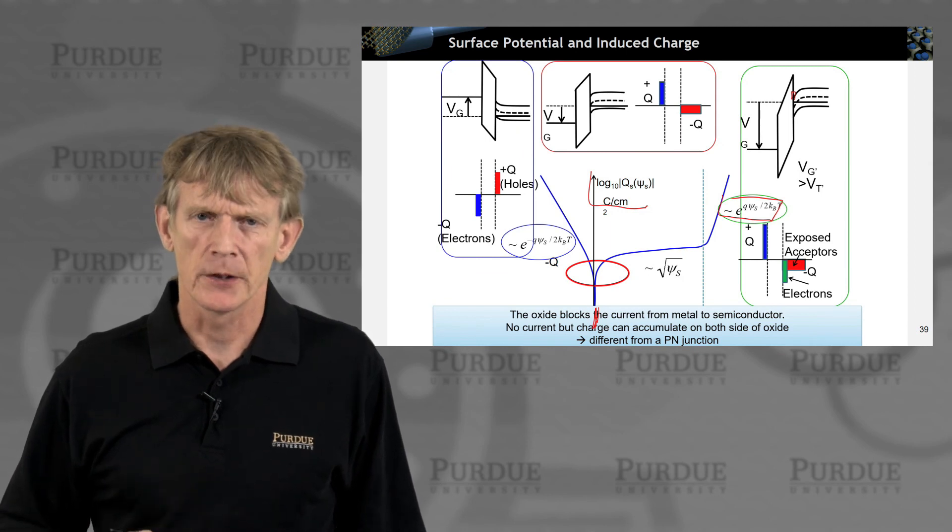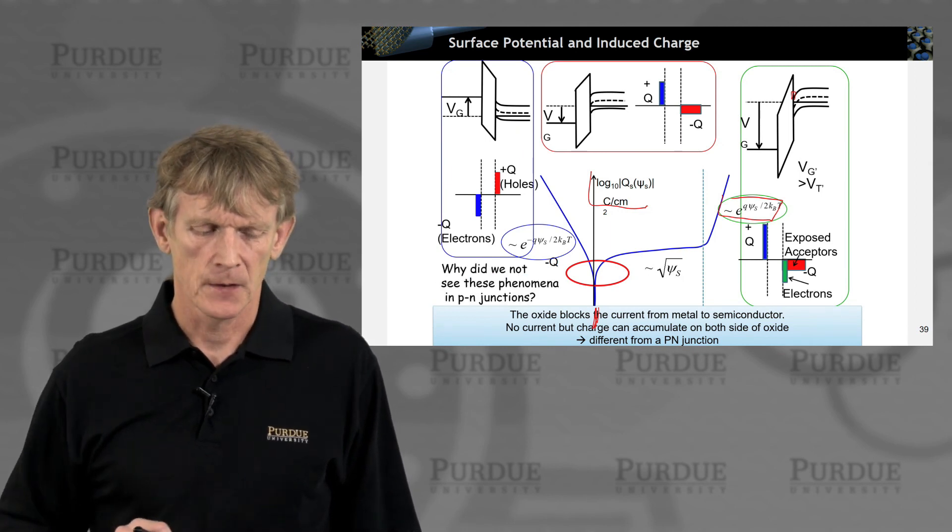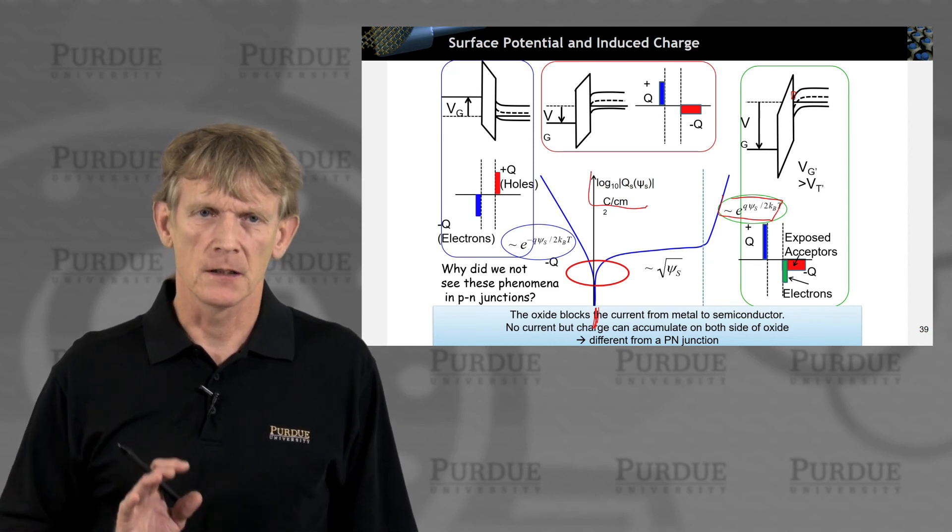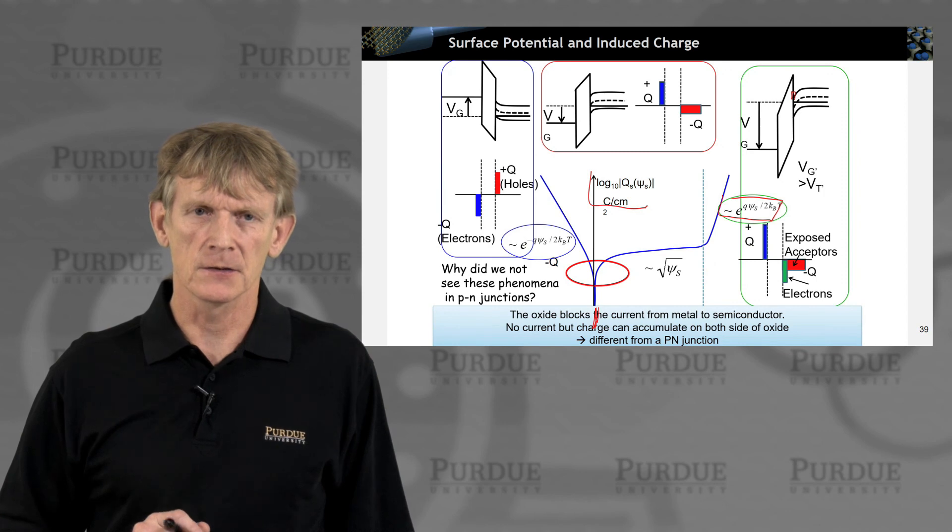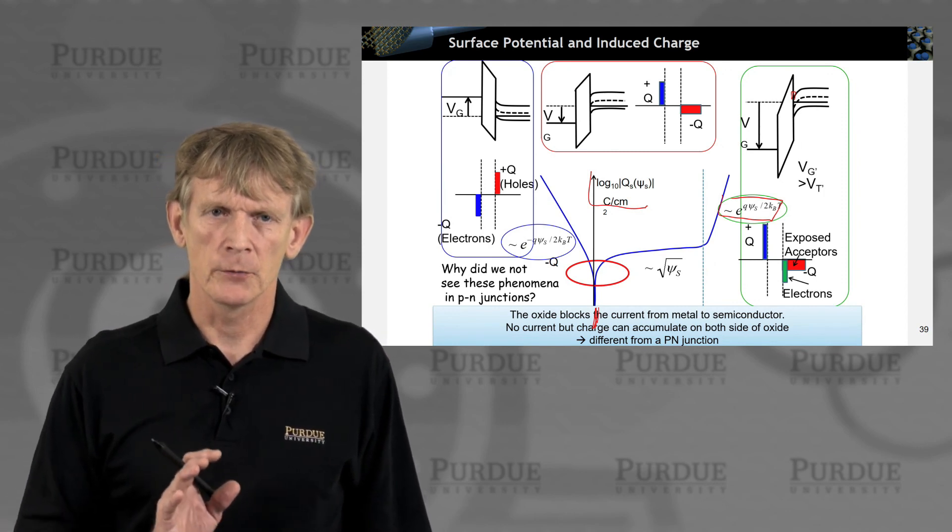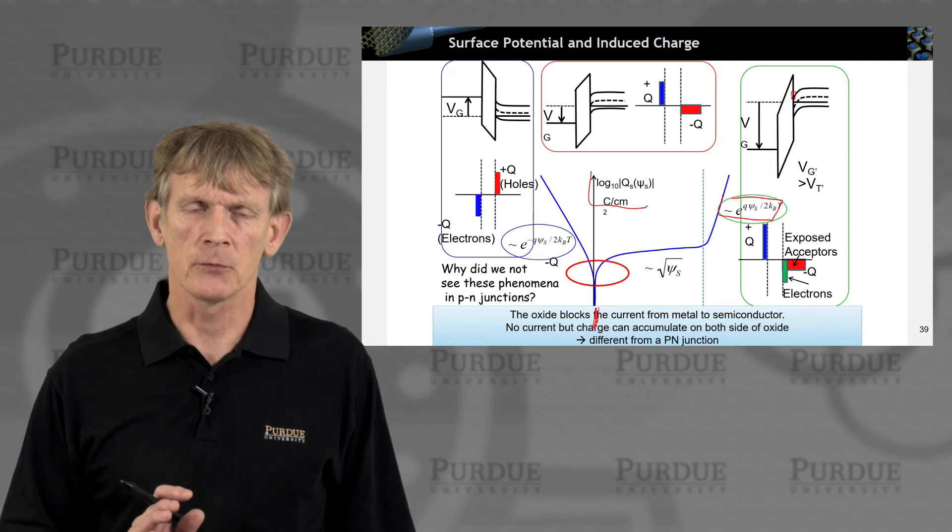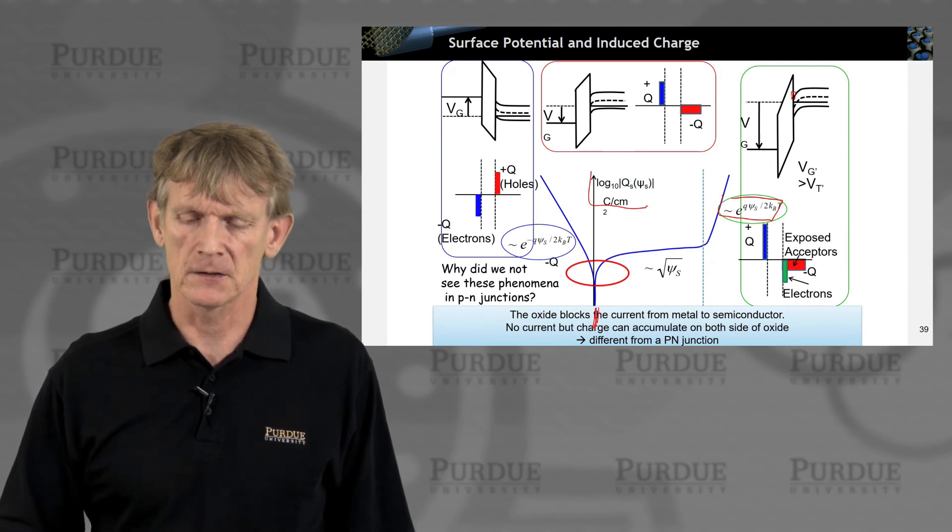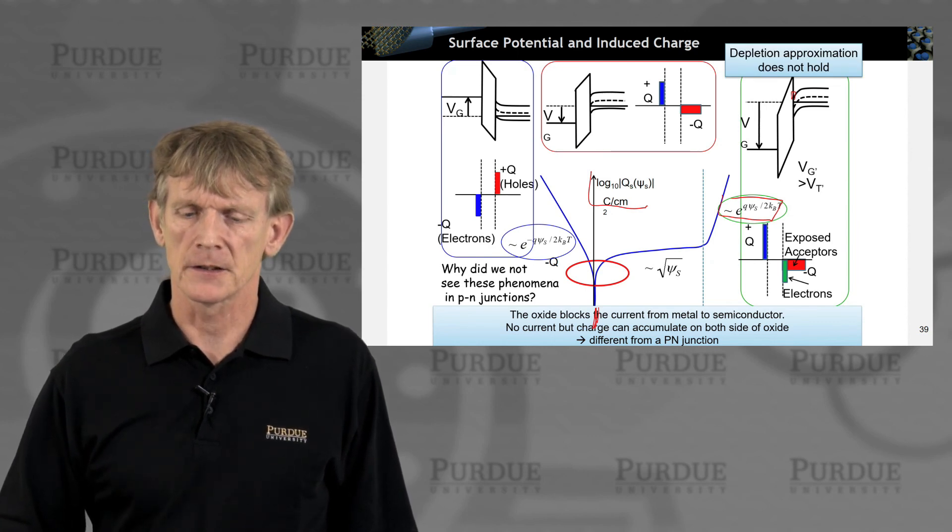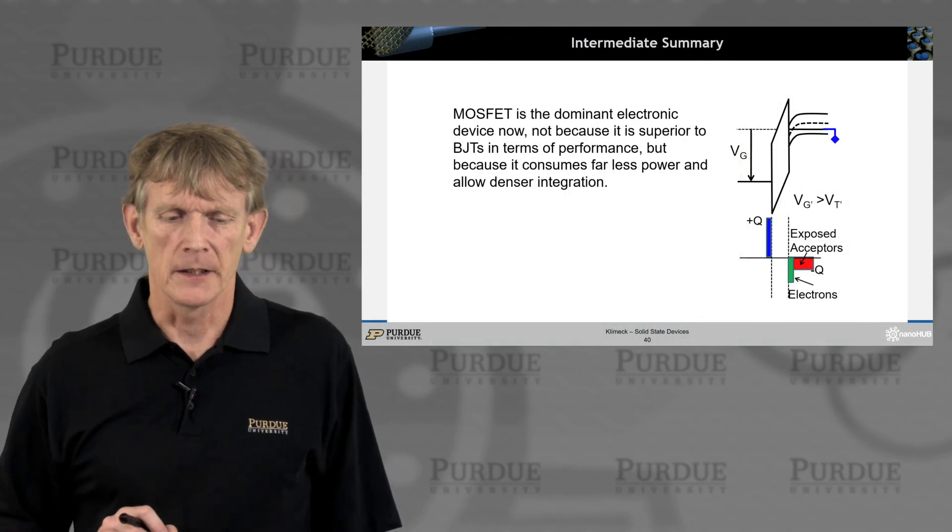This is pretty obvious comment on the bottom. Why did we not see these phenomena of these carriers accumulating like this? Because we didn't have, we were based on a PN junction where we had a depletion region on both sides. But we did see something similar in the Schottky contacts.